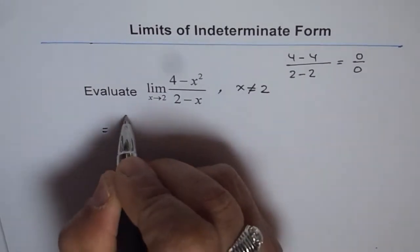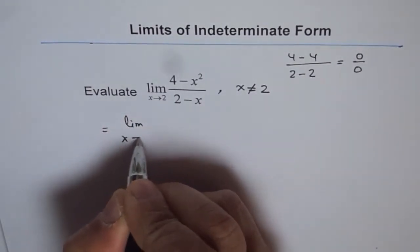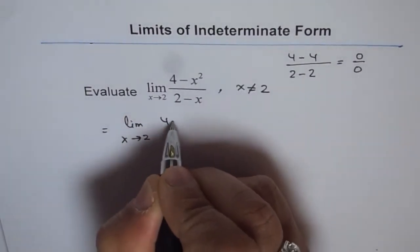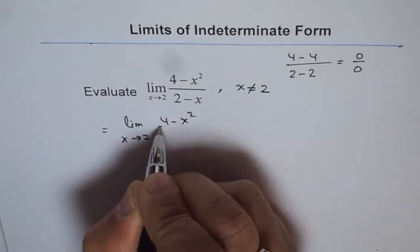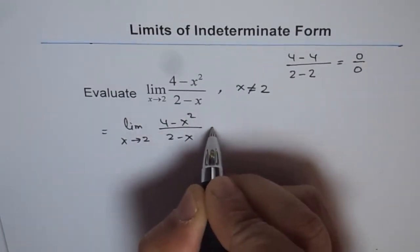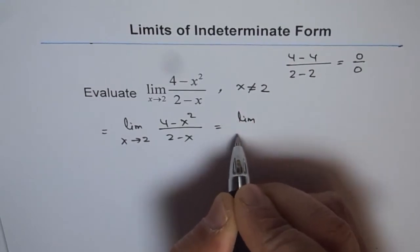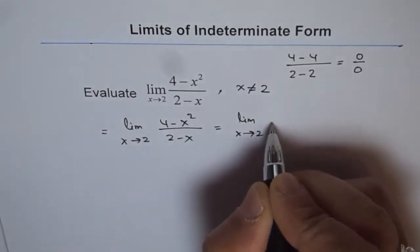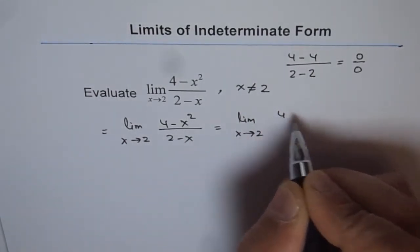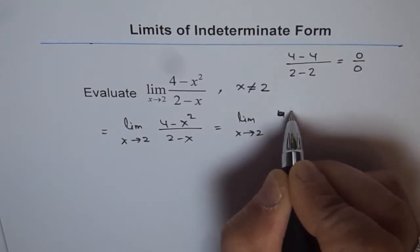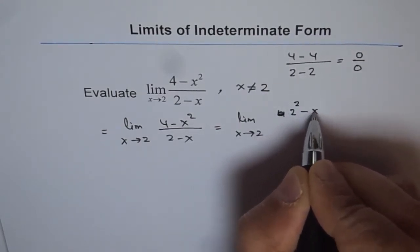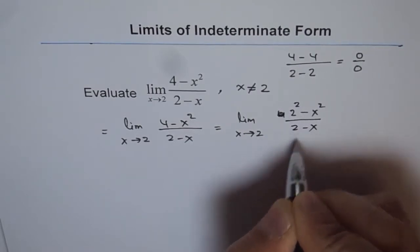So we can write this as limit x approaches 2. The function given to us is 4 minus x squared over 2 minus x. Now 4 minus x squared can be written as 4 is 2 squared. So we will first write it as 2 squared minus x squared over 2 minus x.